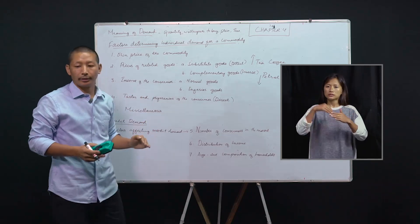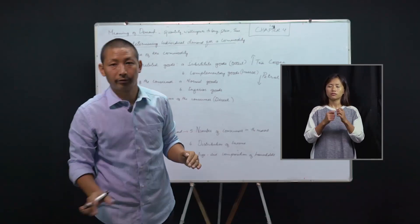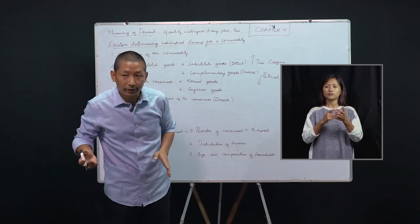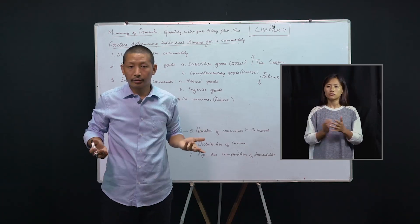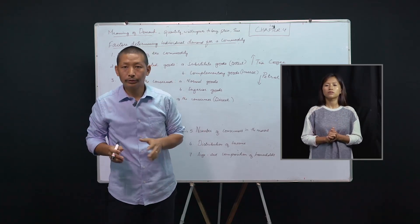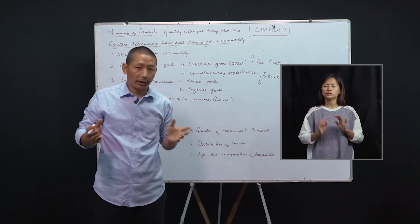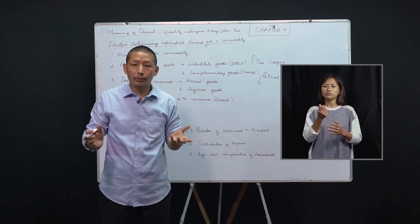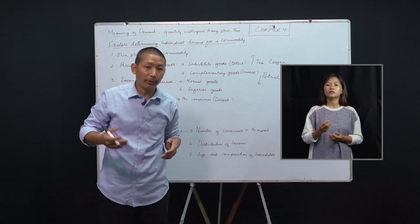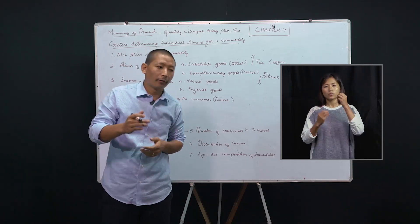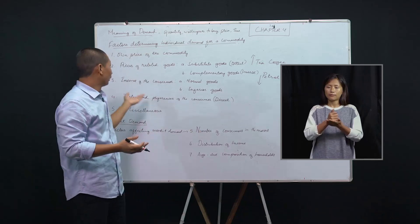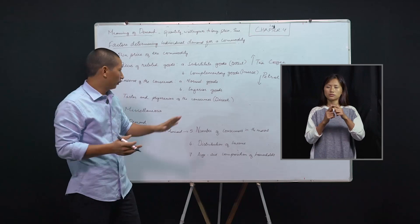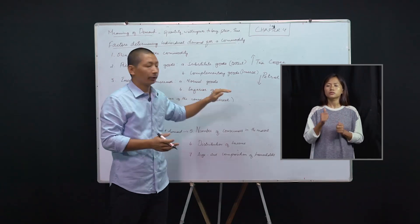Now we have income of the consumer. As a rational being, as a rational consumer, our demand for goods and services increases when our income increases. Initially, when you are poor, you want so many things but because of your lower income you are not able to consume all those goods. But later on, when your income increases and you become richer, your demand for goods and services also rises. To substantiate that statement, we can take the help of two examples: normal goods and inferior goods.